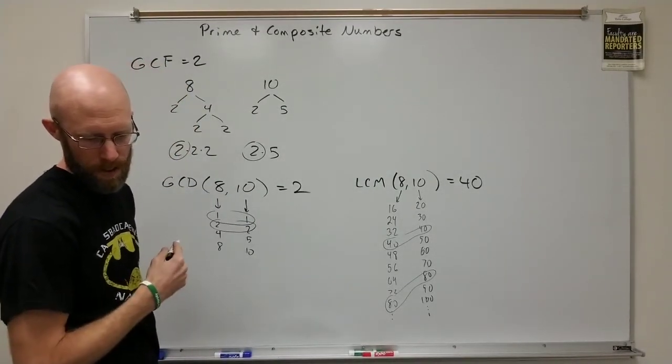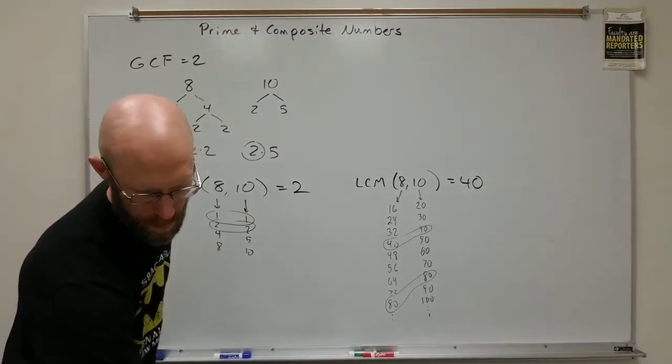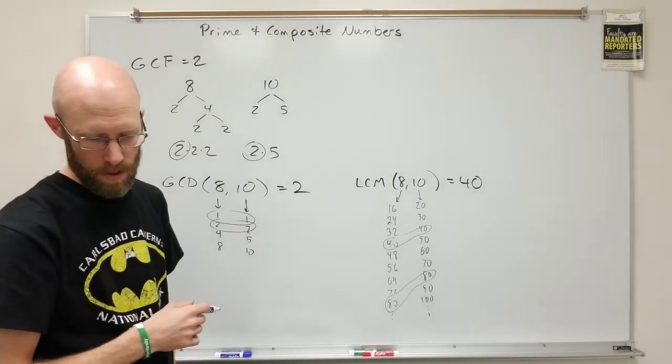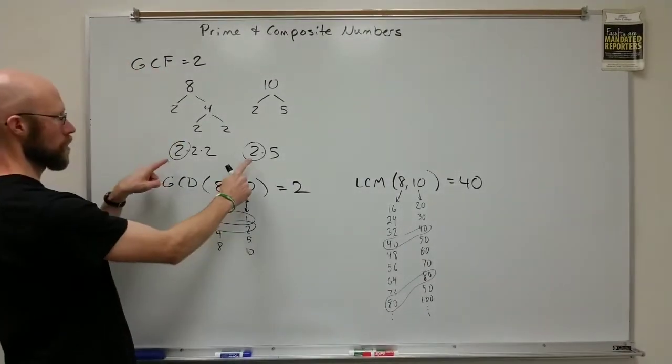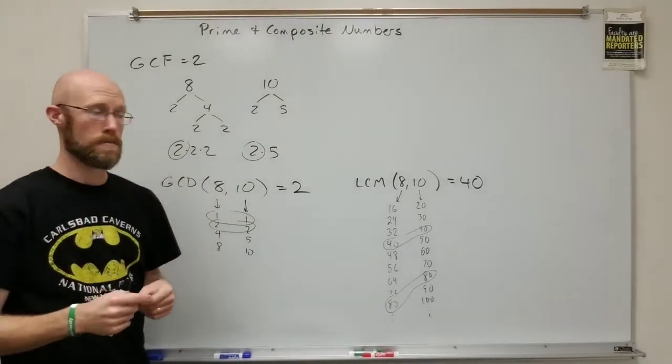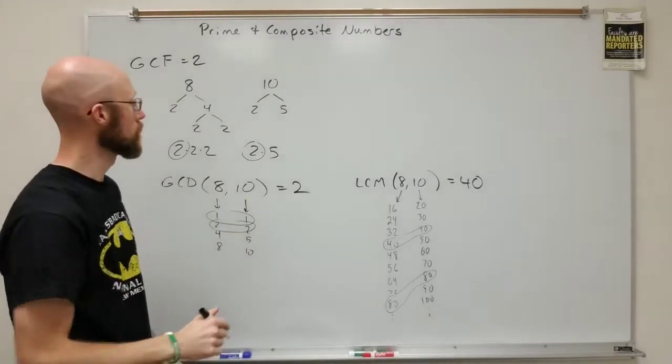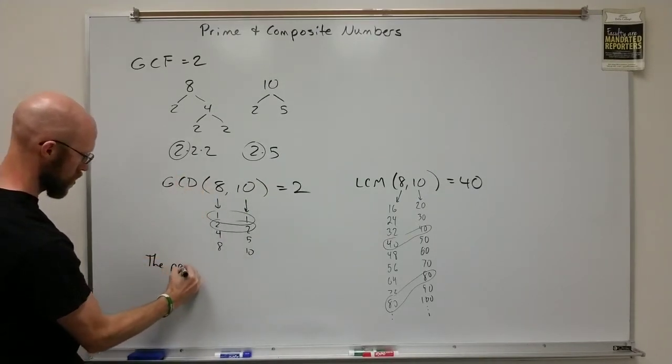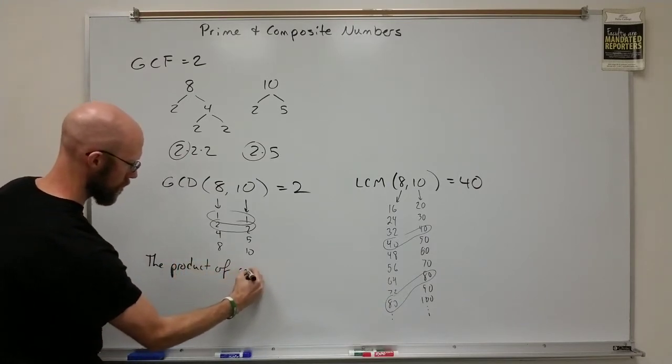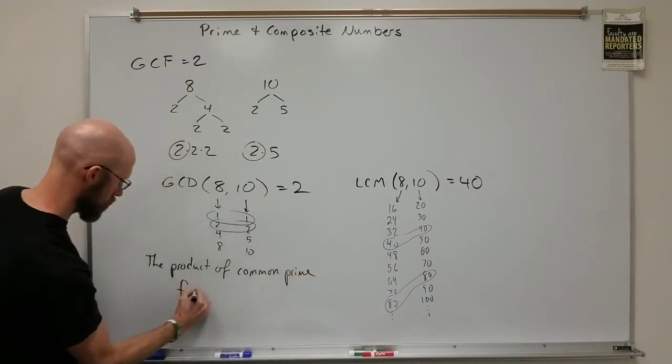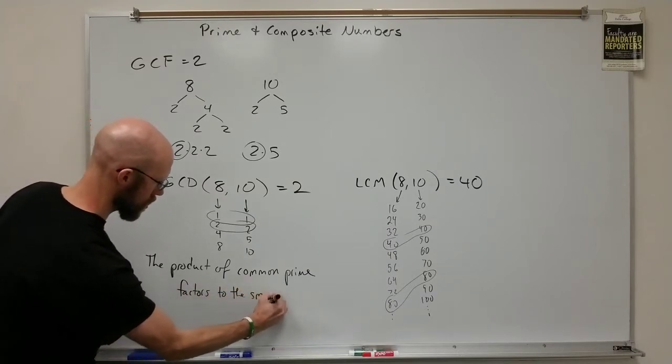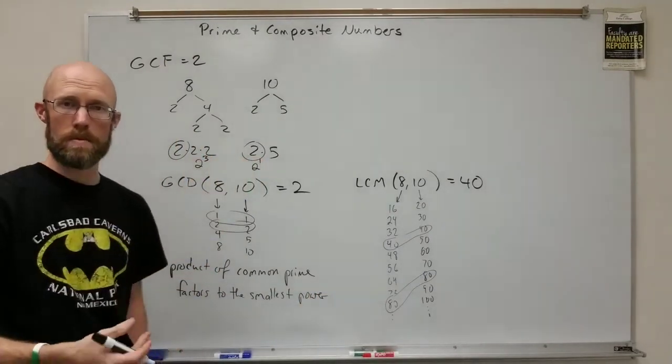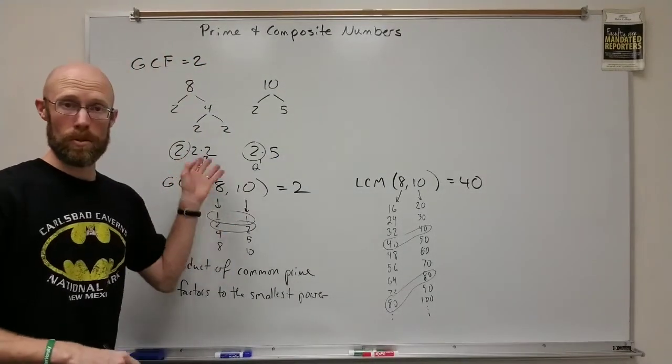Basically, you select every prime factor. Oh, no. I'm looking at the wrong one. You take each prime factor that's common, raised to the smallest power. So here, 2 is common, and it's raised to the 1 power is the smallest power. This was 2 to the third. This was 2 to the 1. You take the one that's smallest. So it would be the product of common prime factors to the smallest power. So instead of 2 to the third, we choose the 2 to the 1, because that's a smaller power. That's the one that will be common. The other ones will be extra.